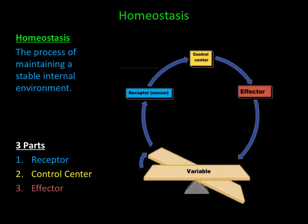A variable is a condition that can be changed or regulated, such as temperature. The variable is on a level board, which represents ideal normal values called a set point. Any changes away from the set point is called a deviation or an imbalance. When a deviation occurs and a variable is no longer in homeostasis, the body will activate mechanisms that will oppose the deviation to return the body back to homeostasis.